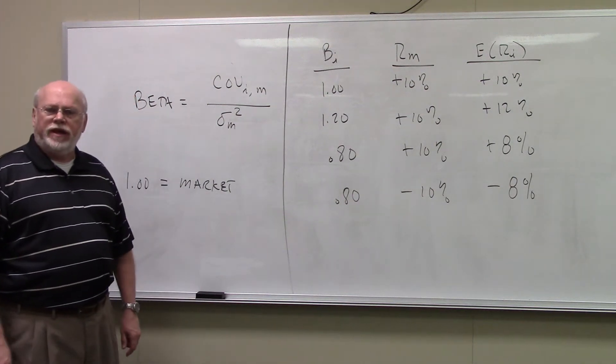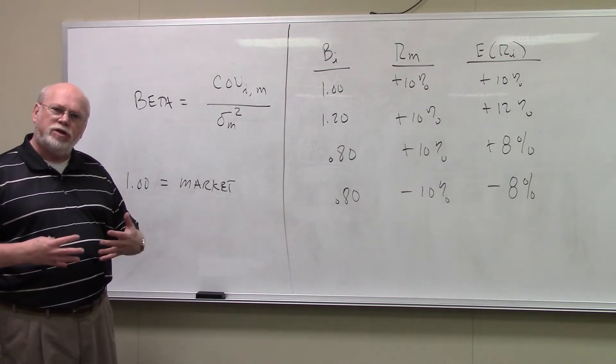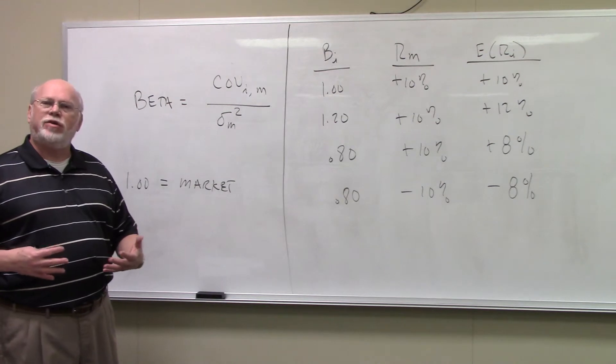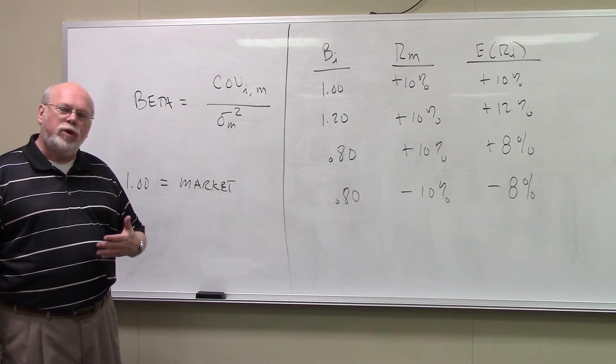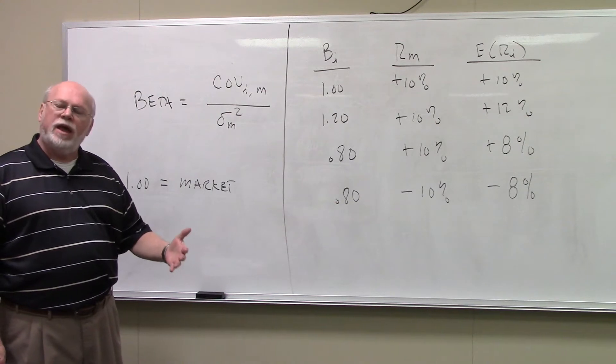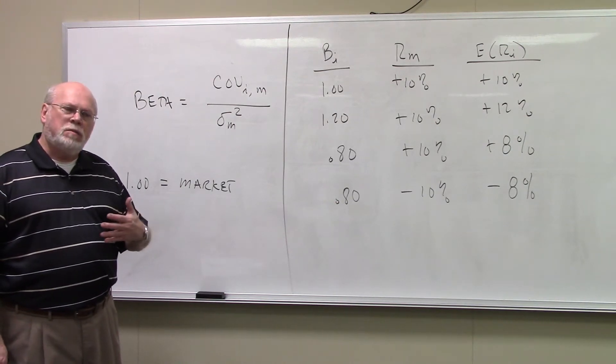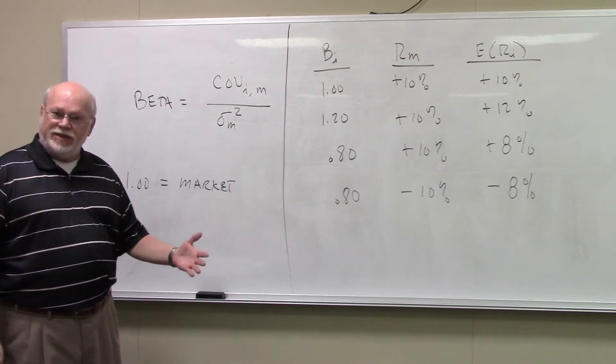Another statistic commonly used in diversification is known as the beta statistic. Beta is actually a measure of what we call systematic risk, and systematic risk is risk that affects all assets.